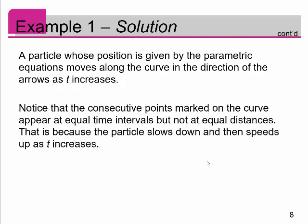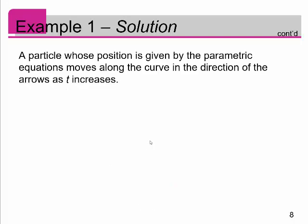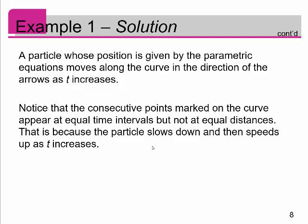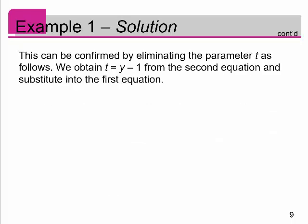Notice that the consecutive points marked on the curve appear at equal time intervals but not at equal distances. That is because the particle slows down at some point — like when it's approaching that curve — and then speeds up as t increases. It appears from figure 2 that the curve traced out by the particle may be a parabola, like a parabola tilted on its side. This can be confirmed by eliminating the parameter t.